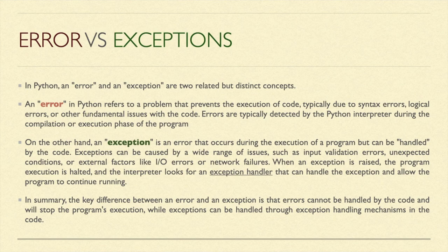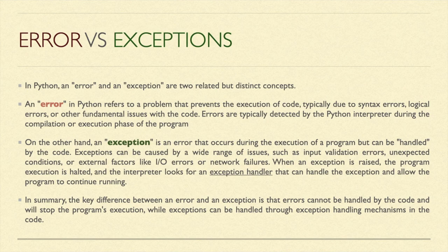When an exception is raised, the program execution is halted and the interpreter looks for an exception handler. If a block of code is not capable of handling some exception, it will expect another block of code to handle that error. In summary, the key difference is that errors cannot be handled by the code and will stop the program's execution, while exceptions can be handled through exception handling mechanisms in the code.